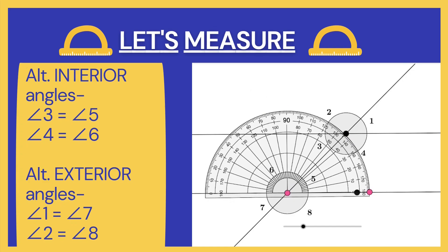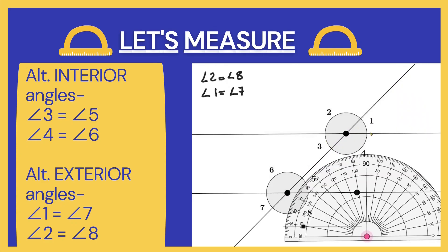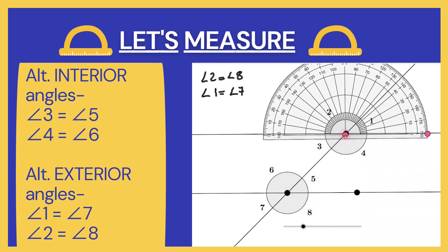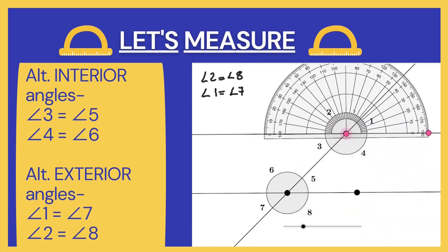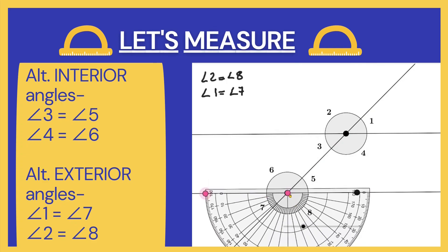Now let's check for alternate exterior angles. Angle 2 must be equal to angle 8, and similarly angle 1 must be equal to angle 7 — these pairs are on the exterior side as well as on the alternate side of the transversal. Keeping the protractor at angle 1, we can see that angle 1 is 45 degrees. Since angle 1 and angle 3 are vertically opposite angles, let's instead measure angle 2 — angle 2 is 135 degrees. Now keeping the protractor to measure angle 8, we can see that angle 8 is also 135 degrees. Therefore angle 2 equals angle 8, that is 135 degrees — these are the pairs of alternate exterior angles.